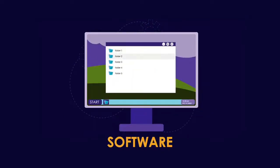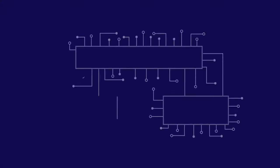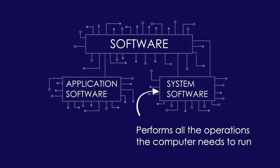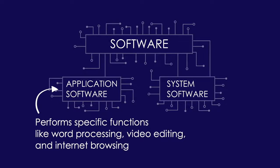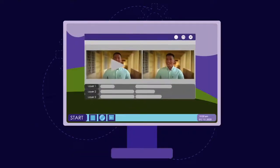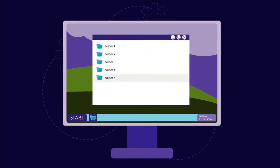Next, we have software. Software is also known as a program or application that runs on a computer. It also enables a computer to perform a specific task. There are two classifications of software: the system and application software. System software performs all the operations the computer needs to run. A perfect example of this is your operating system like Windows for Microsoft and Mac OS for Apple. While application software performs specific functions like word processing, video editing, and internet browsing. Just remember the physical parts of the computer that can be touched is called hardware, and a part of the computer that cannot be seen or touched is called software. But to make the hardware work, you will need the software in it.